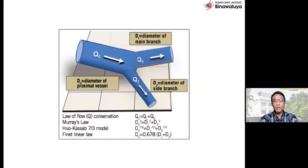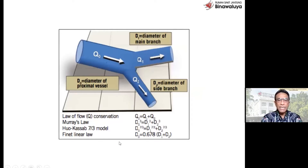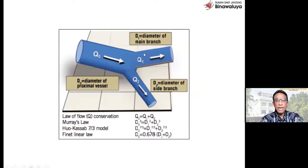Saya ingin mereview lagi, sebenarnya bifurkasi law itu bagaimana. Dr. Sukri dan Dr. Hakim sudah sangat familiar bahwa ini main branch, ini distal main branch, lalu side branch di sini. Banyak persamaan yang bisa kita lihat, tapi yang paling sederhana adalah persamaan dari Vine law. Yaitu diameter dari main branch sama dengan 0,678 kali penjumlahan dari diameter-diameter side branch. Ini yang paling gampang.